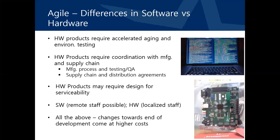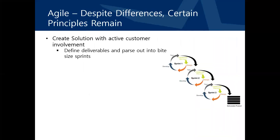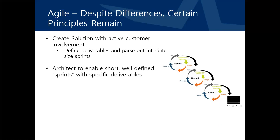Implied in all of the above is the fact that changes toward the end of hardware development come at a much higher cost. Despite the differences between software and hardware, some fundamental principles remain. First, you must create your solutions with active customer involvement, including early on in the architectural phase. You do this by defining the different deliverables to the customer and parsing them into bite-sized sprints. Architect your solution to be able to execute these deliverables through short, well-defined sprints.